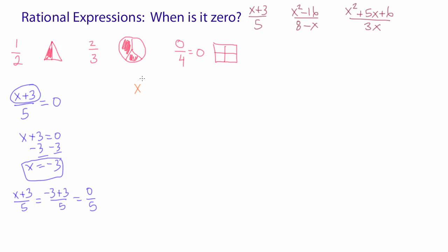X squared minus 16 over eight minus x. Not a problem. When is this expression equal to zero? Well, we need to see the numerator. X squared minus 16. Set that to zero.